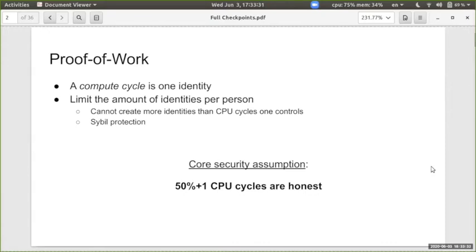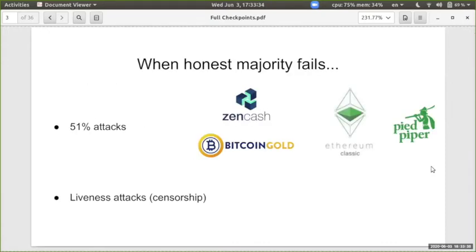What happens when honest majority fails? In ledgers, this would occur if the system is young, hasn't matured yet, and not enough hashing power secures it. Then it would be easier for an attacker to buy some hashing power and attack it.